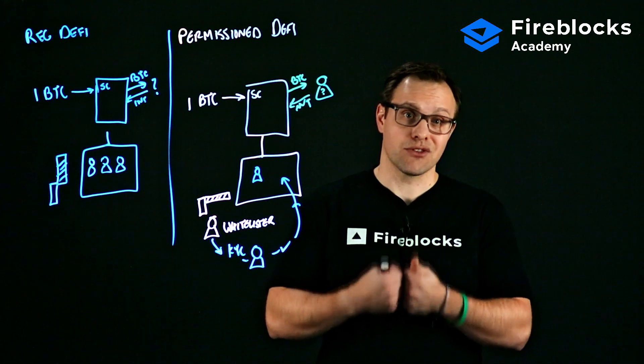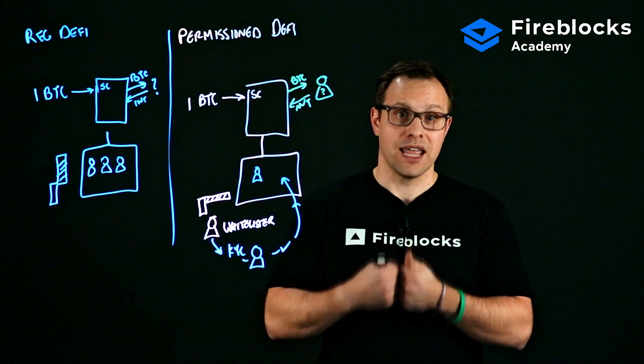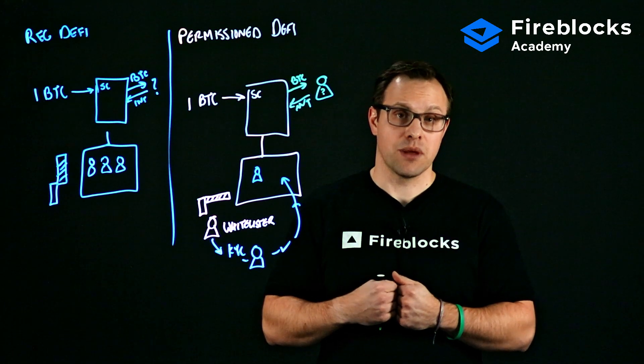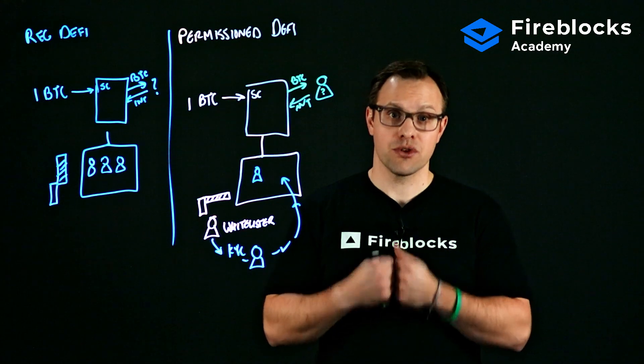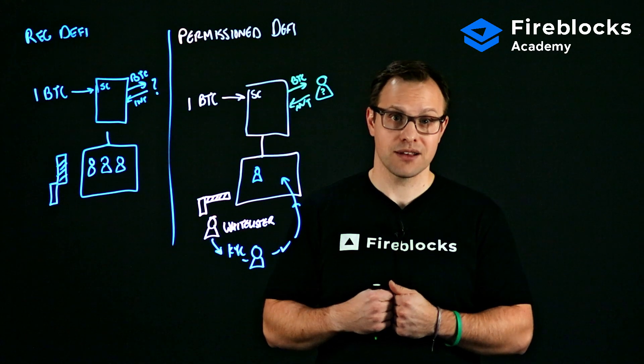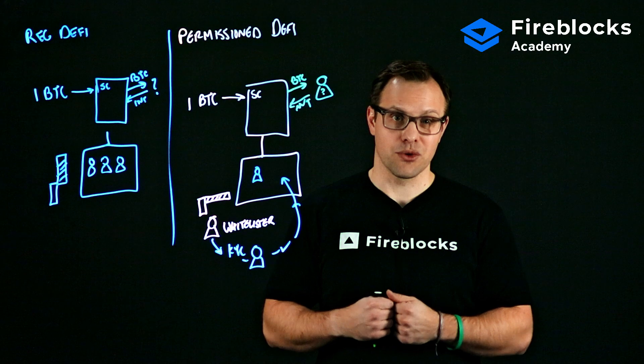To summarize: the main difference between regular DeFi and permissioned DeFi is that regular DeFi is open to anyone and everyone, which can cause headaches around KYC and AML compliance for regulated institutions. Permissioned DeFi solves this by doing KYC checks on anyone that would like to enter into the smart contract or pool, making your compliance and risk teams much more comfortable participating in the DeFi world. That's it for now — join us for more educational content at Fireblocks Academy, thanks so much for joining.